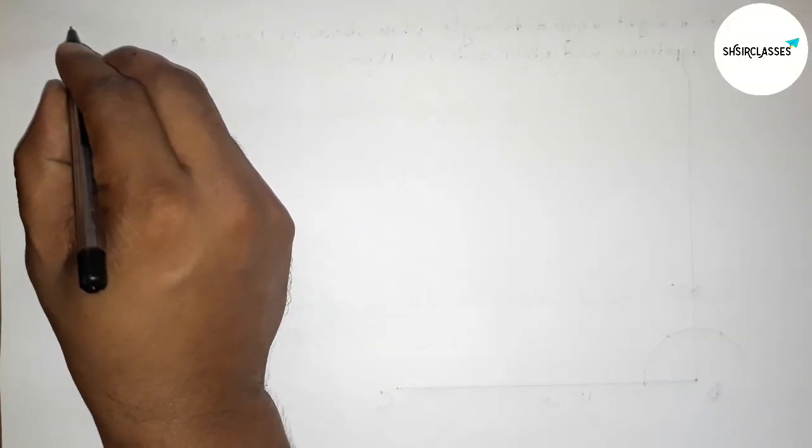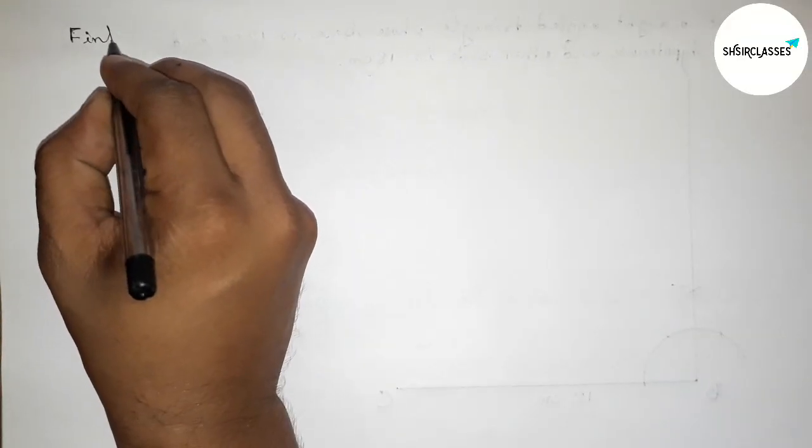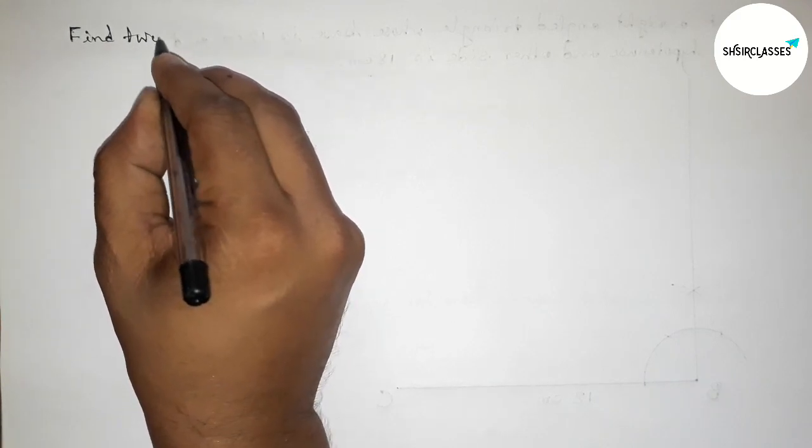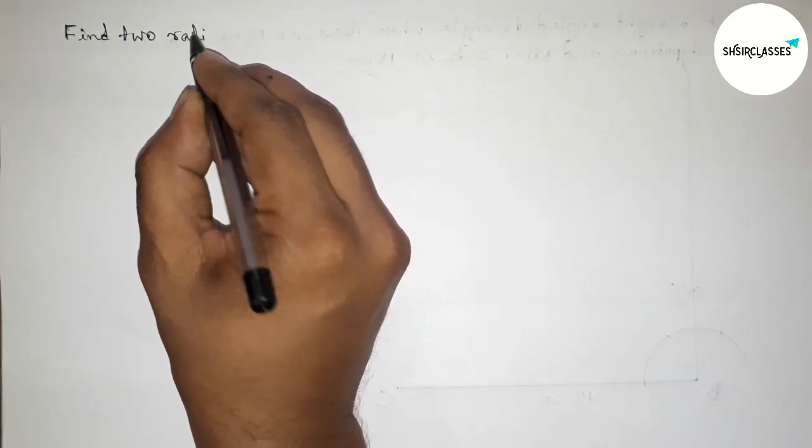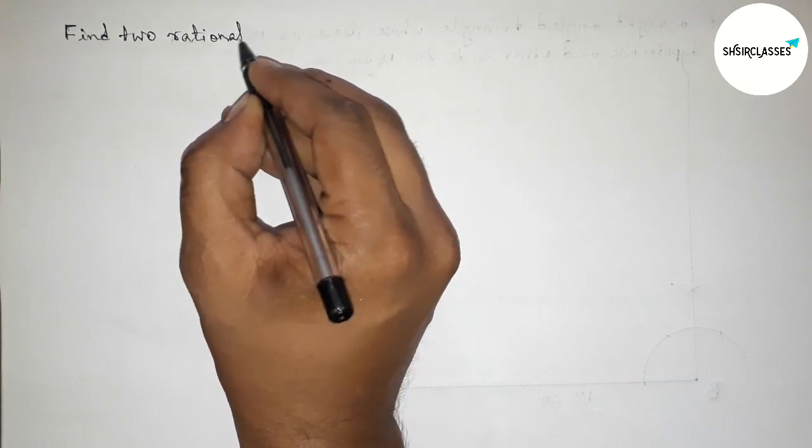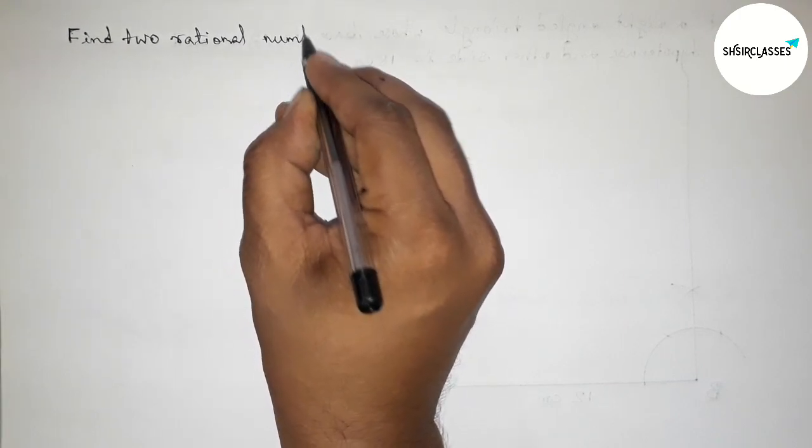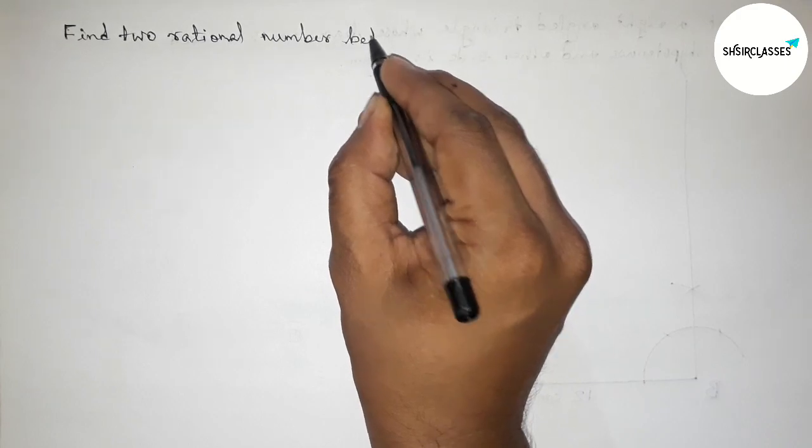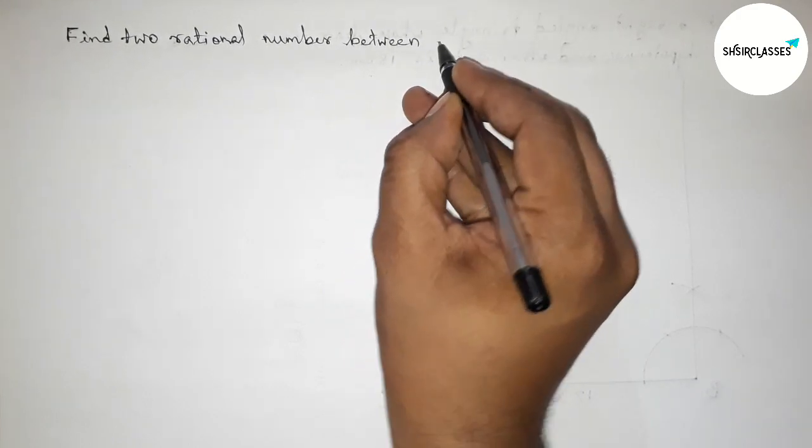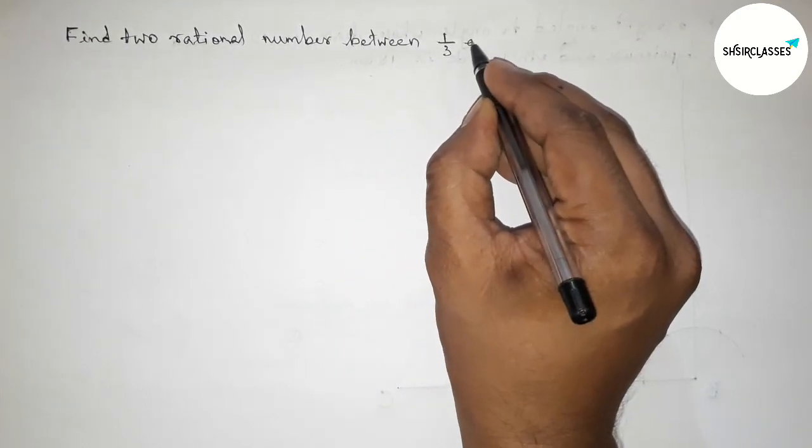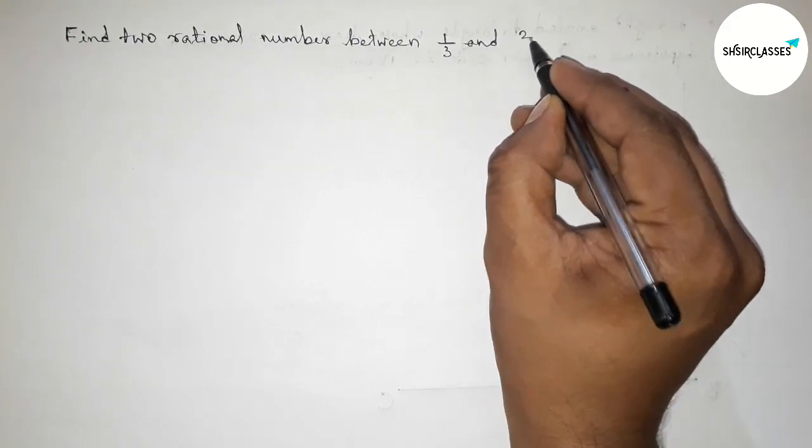Hi everyone, welcome to SI Share Classes. Today in this video we have to find two rational numbers between 1/3 and 2/7 in an easy way. So please watch the video till the end. Let's start the video.